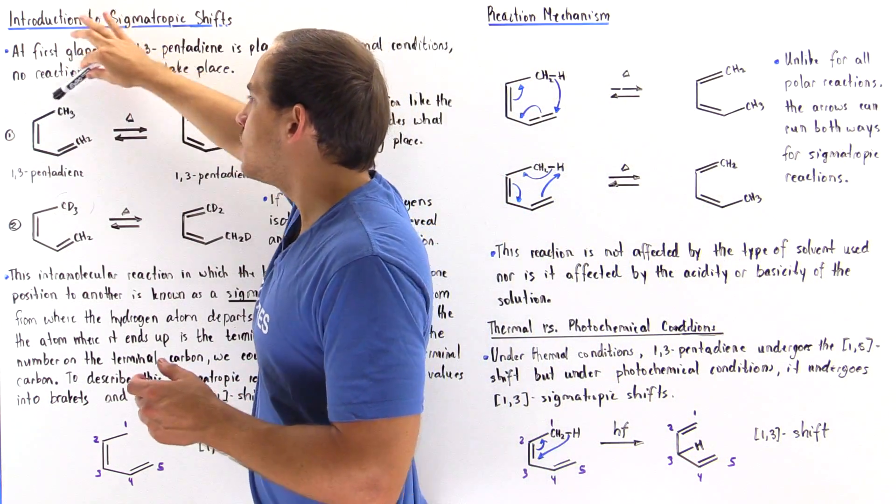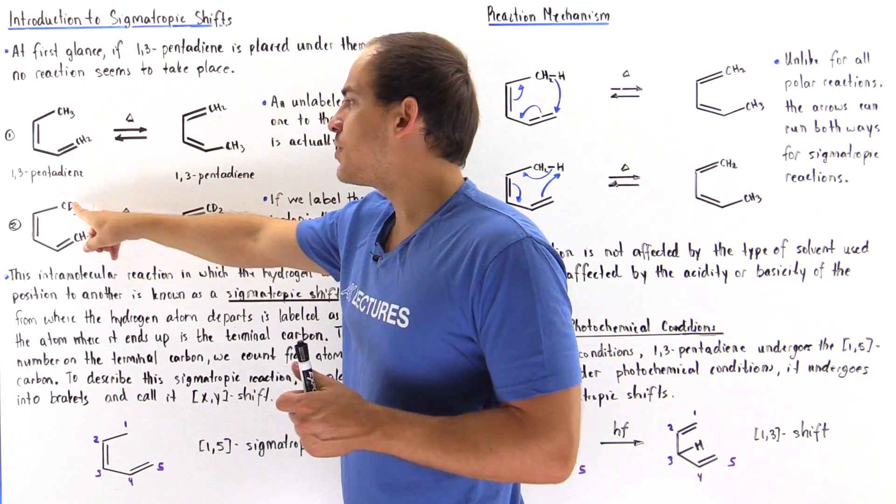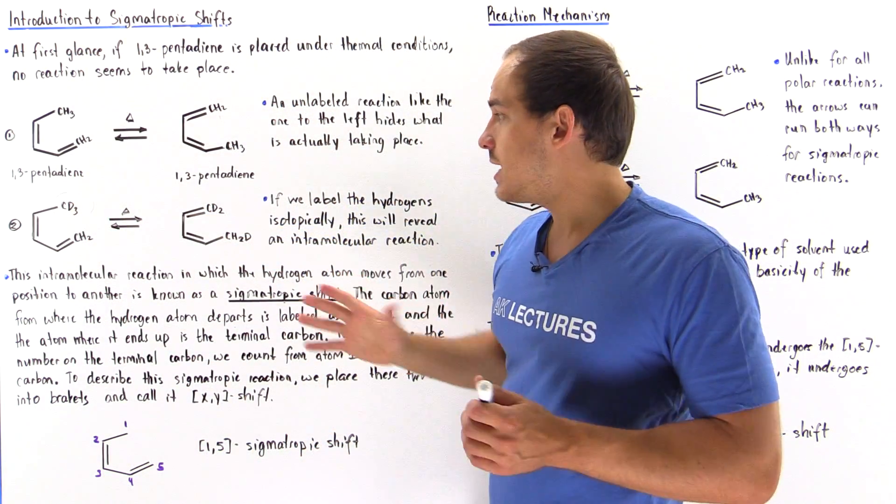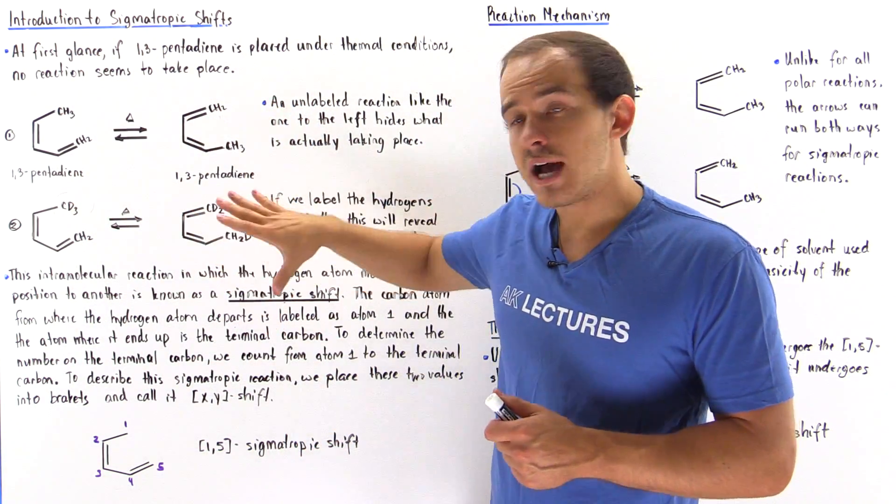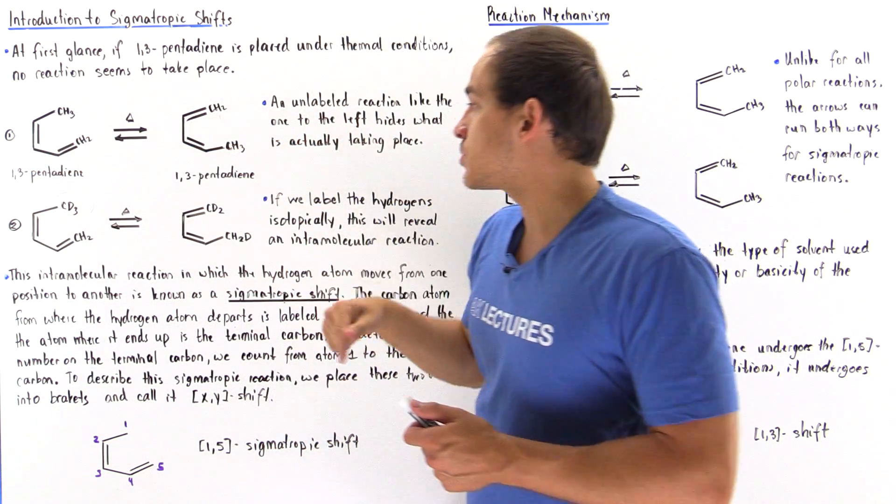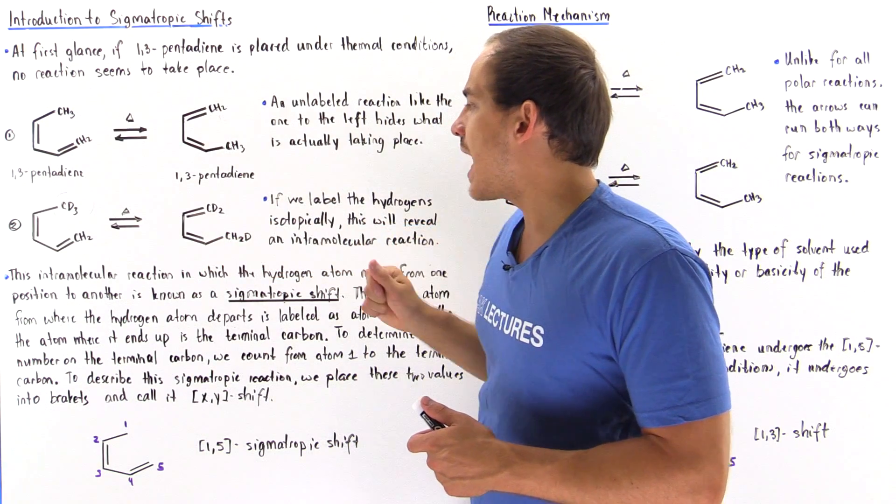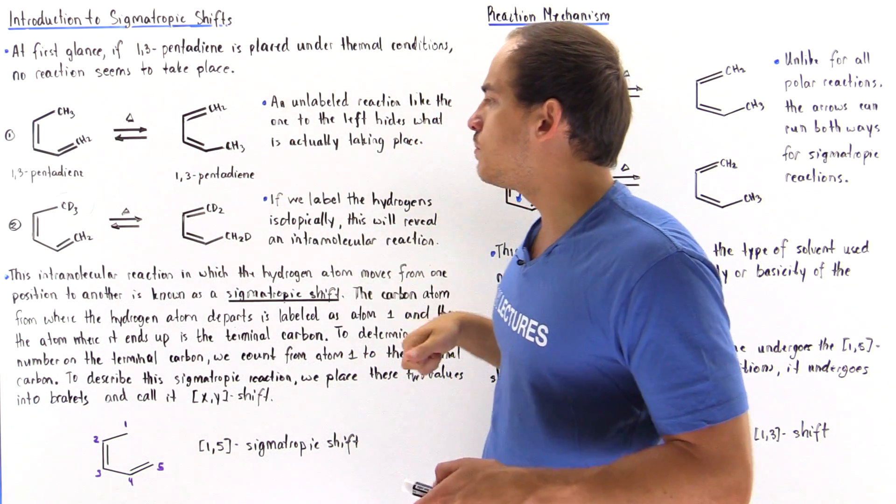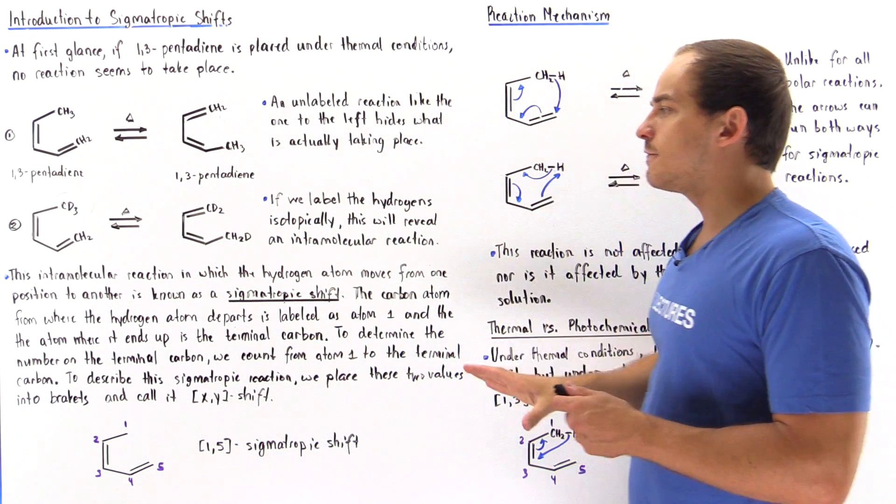If we replace these three H atoms with three deuterium atoms, we see that the product is different isotopically than our reactants. So we see that one of the H atoms moves to this H atom and that shifts these two pi bonds to two different positions.